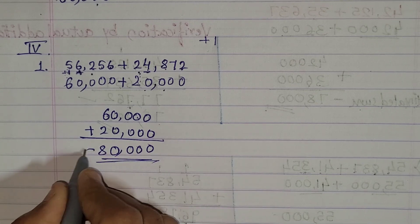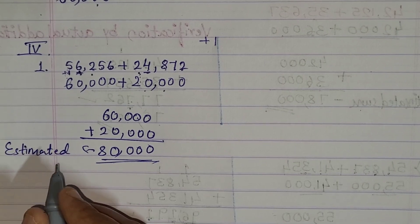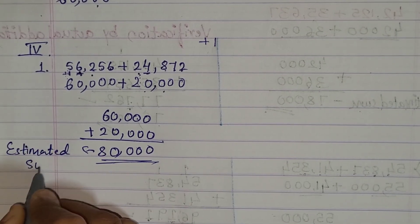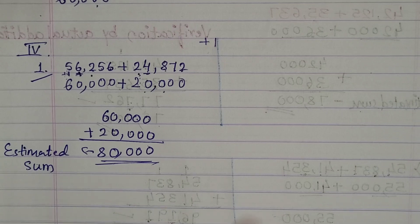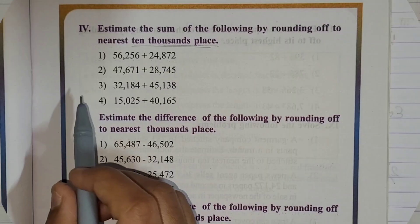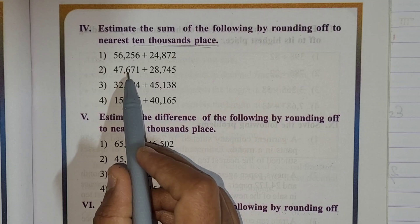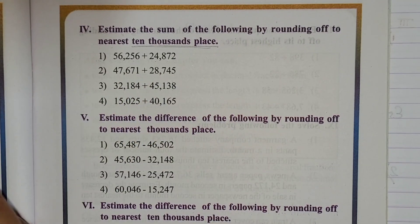This is what we call the estimated sum — that is the estimated sum for example one. You can also do the verification by following the same method done in the fourth main earlier. Now let's take the second example: 47,671 plus 28,745.